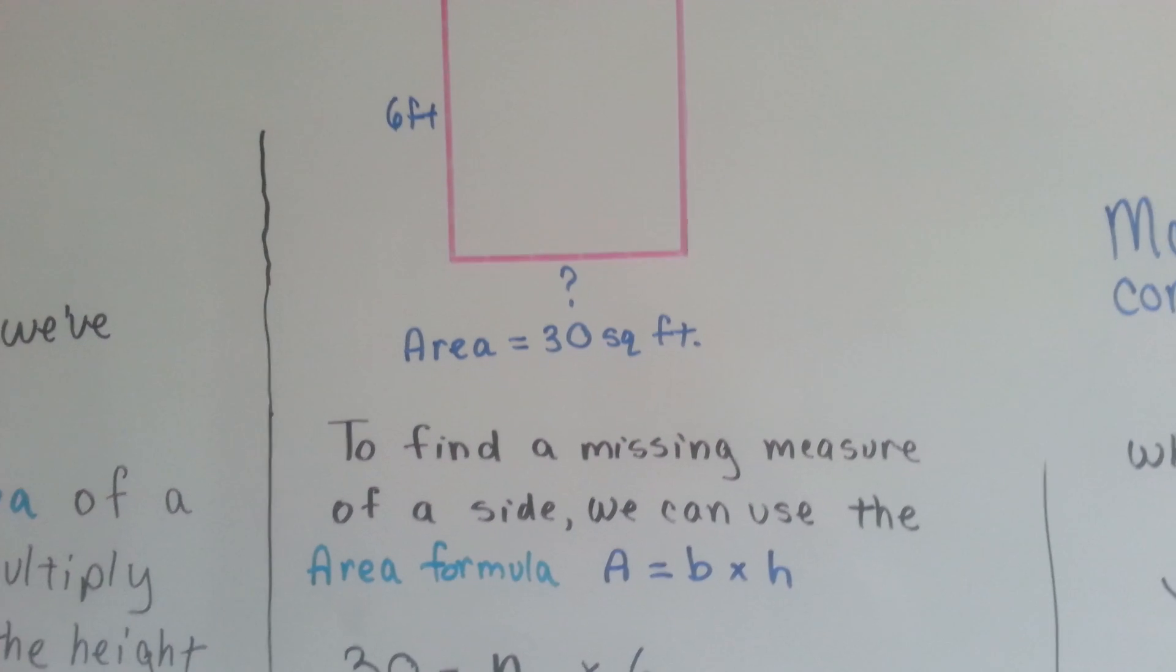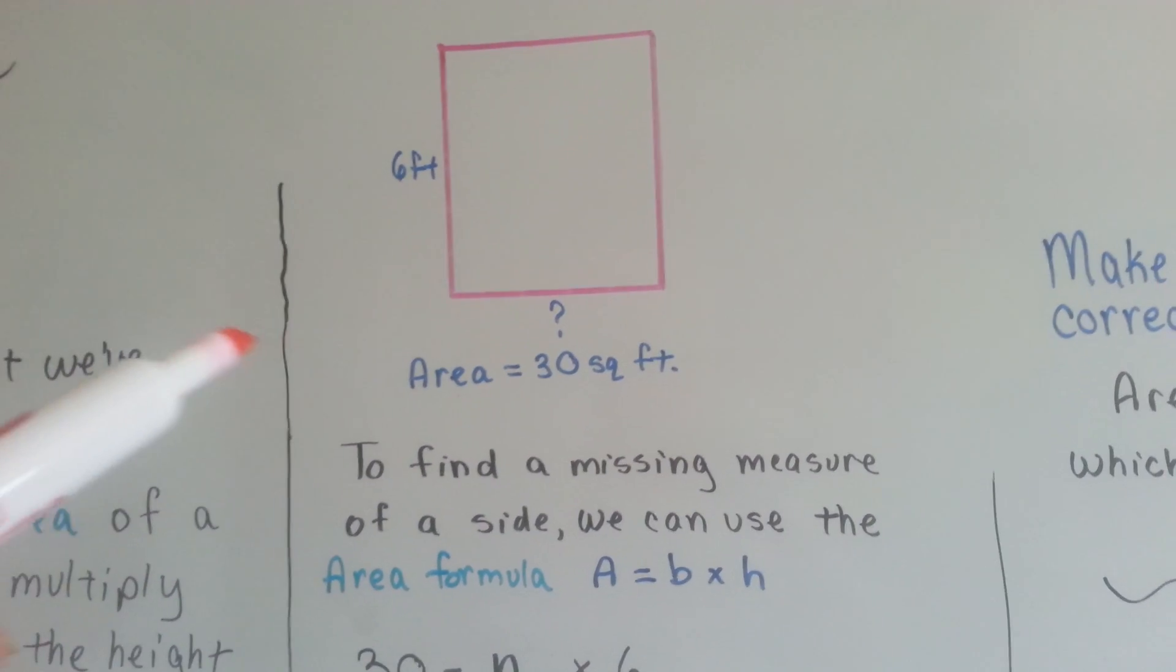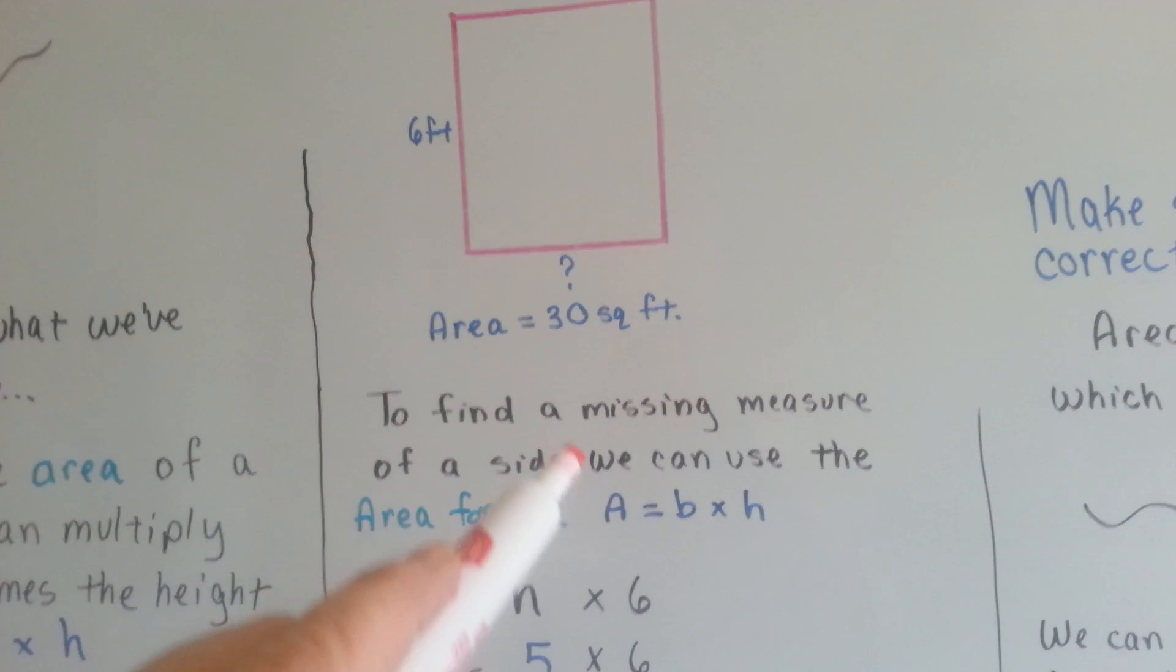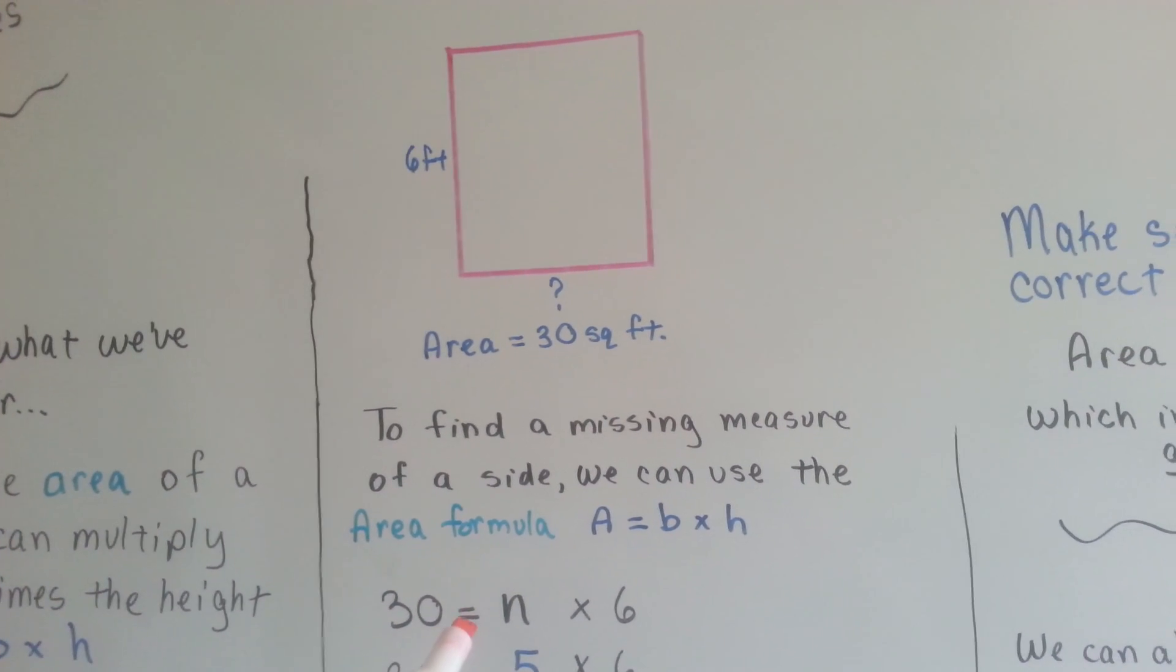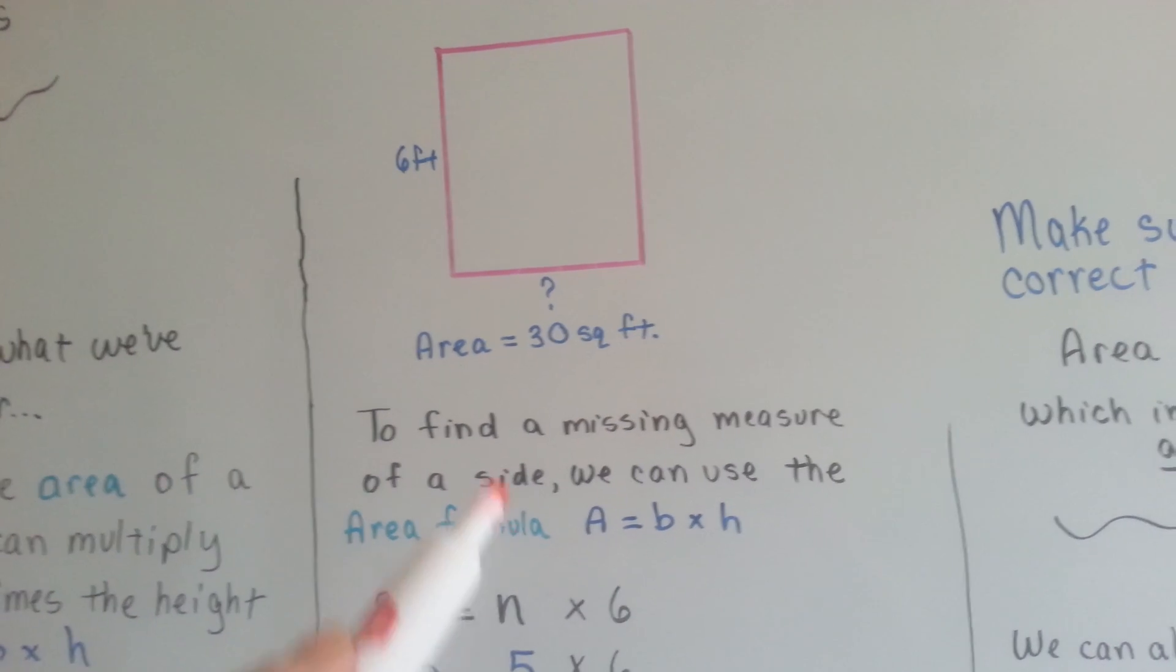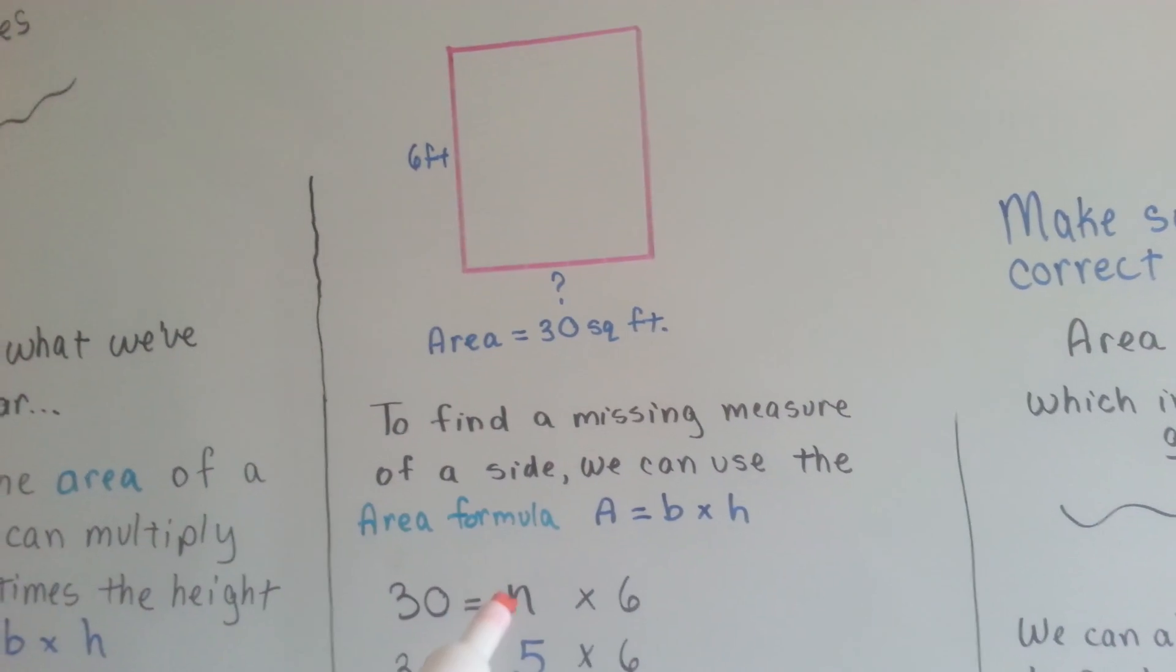To find a missing measure of a side, we can use the area formula. Area equals base times height. We know that the area is 30, so we know we've got 30 and it's supposed to be base times height, so some number times 6, n times 6.